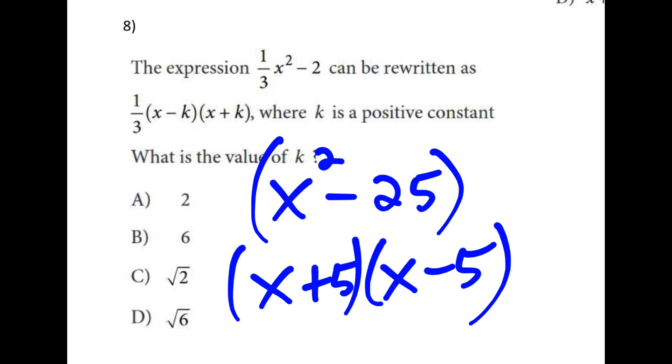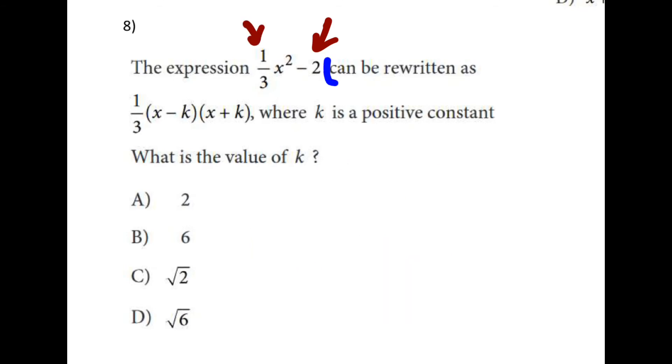And then if we were to expand those, the plus 5x and the minus 5x cancel each other out. And that's a difference of squares. So one obstacle is that 2 is not a perfect square. And we also see this 1 3rd here. So remember that can be rewritten as is pretty much an equal sign.